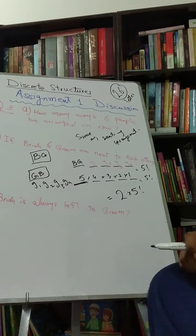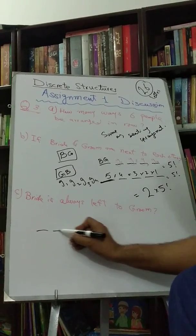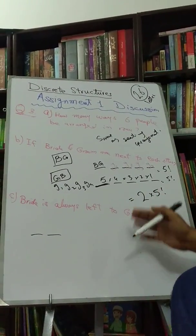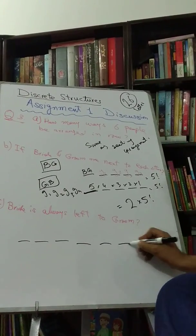See what is easy. Bride is always left to groom. So see, when we have, and no, there is no restriction whether bride and groom are together or not. So we have six positions.